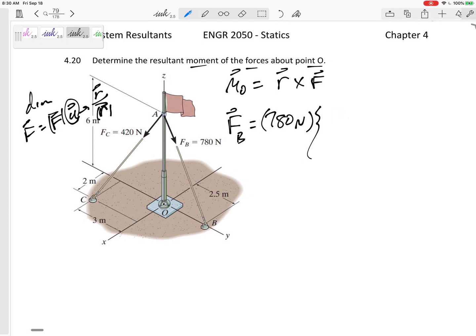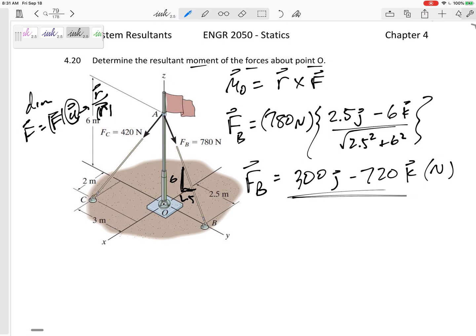2.5. This is really 2D but I'll act like it's 3D, use my R over R process. 2.5 in the J, and then how far does it go in the K? It goes down 6 in the K, divided by the magnitude: 2.5 squared, 6 squared, take the square root. And so F_B I've got 300 J minus 720 K, units are Newtons. So it was really 2D. You could have seen 2.5 by 6 and done that. I kind of did it the longer way that I normally use for 3D problems, but either way you should get 300 in the J and down 720 in the K.